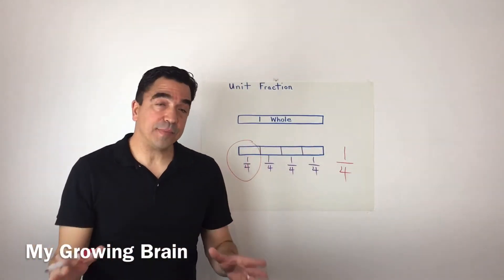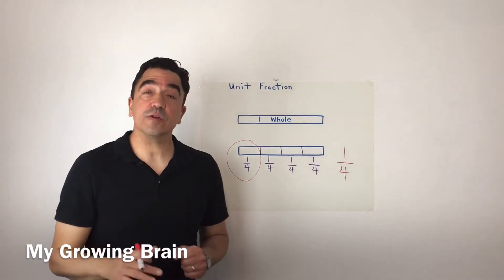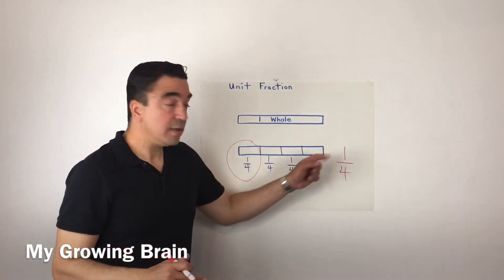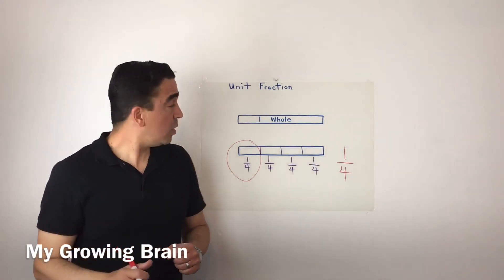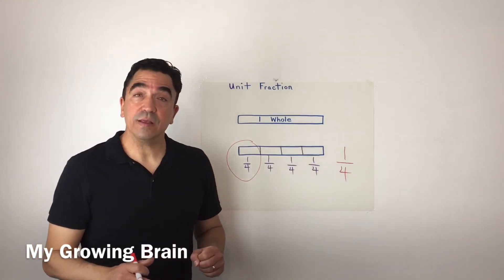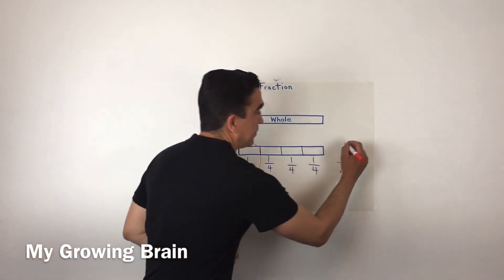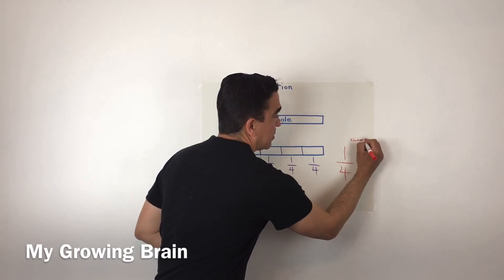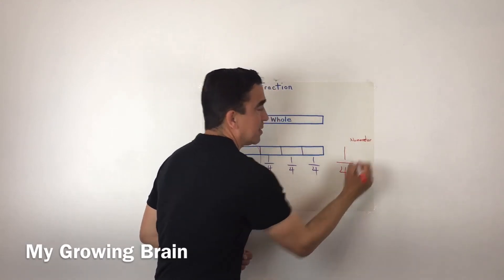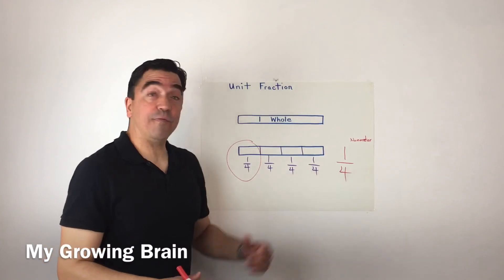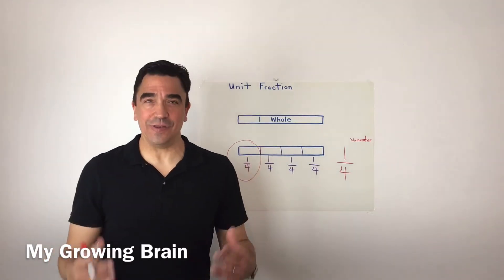The top number of a unit fraction is one, so the one is our numerator, and the bottom number four is our denominator.